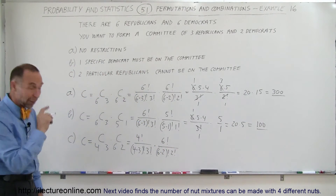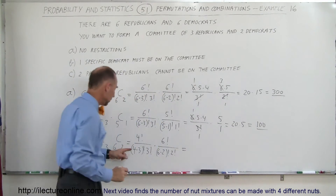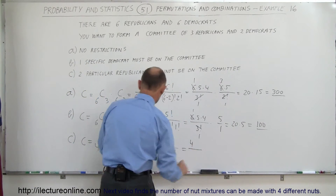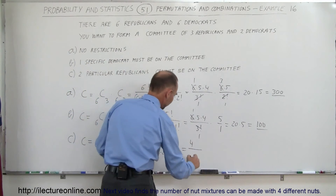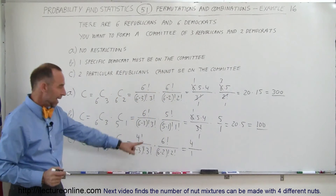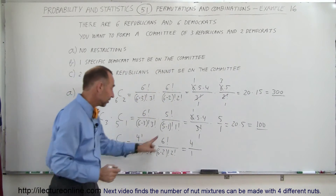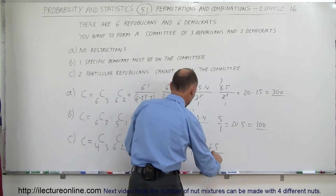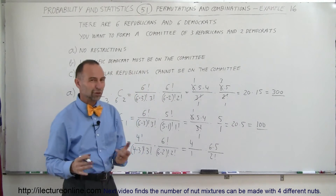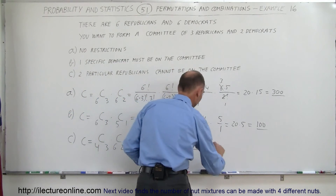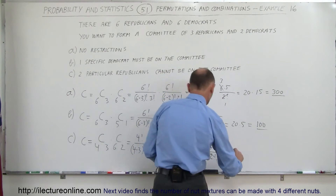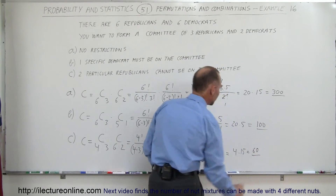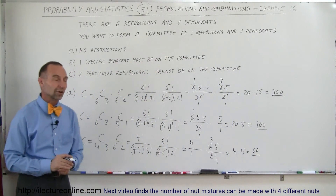Simplifying: for the first term, 4! divided by (1! × 3!) gives simply 4 divided by 1, which is 4. For the second term, 6!/4! gives 6×5 divided by 2!, and since 2 divides into 6 giving 3, that becomes 3×5 = 15. So this becomes 4 times 15, or 60 different combinations under those restrictions.